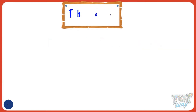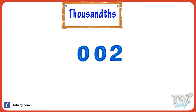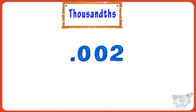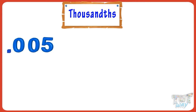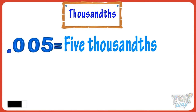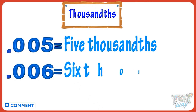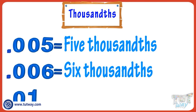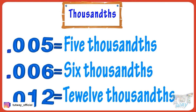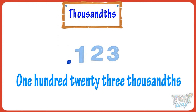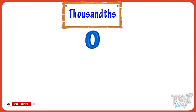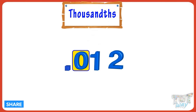Now let's learn about the thousandths place. Thousandths place means there are three digits after the decimal point. Point zero zero two is named as two thousandths. Let's have a look at a few examples: point zero zero five is five thousandths; point zero zero six is six thousandths; point zero twelve is twelve thousandths; point one twenty-three is one hundred twenty-three thousandths. So kids, whenever there are three digits after the decimal point, you name them as thousandths. And remember, zeros hold places where the digits are less than three.